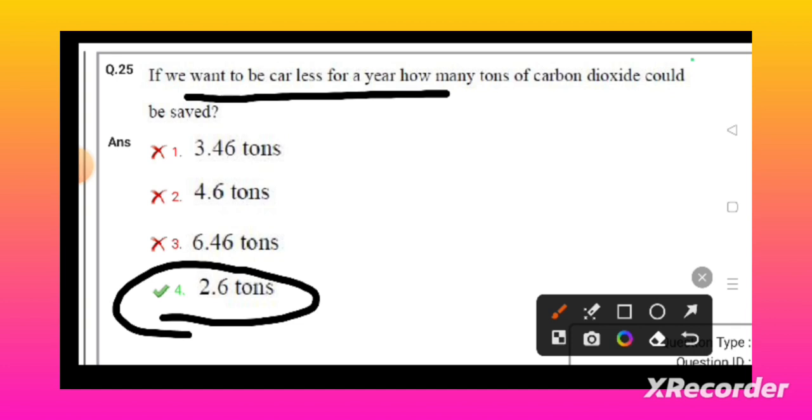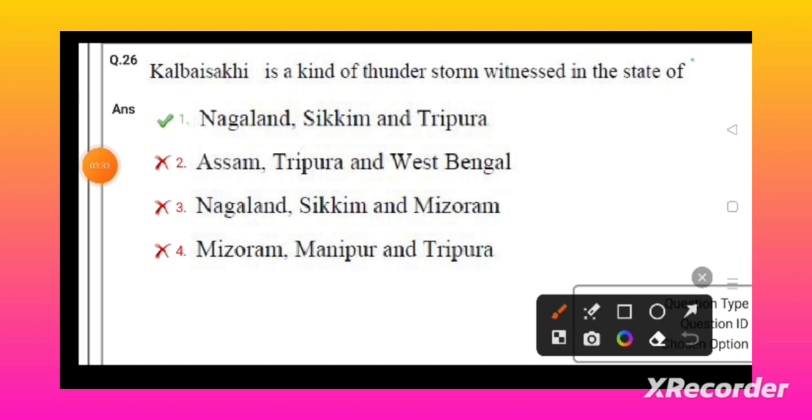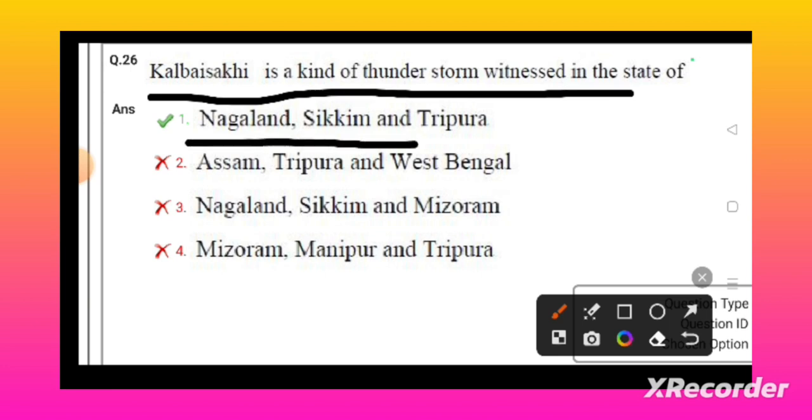This is somewhat a typical question. Kal Baisakhi is a kind of thunderstorm witnessed in the states of Nagaland, Sikkim, and Tripura. This is a different question. All the questions are more easy, but this will be somewhat typical. Kal Baisakhi is the type of thunderstorm witnessed in the states of Nagaland, Sikkim, and Tripura.